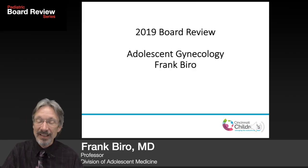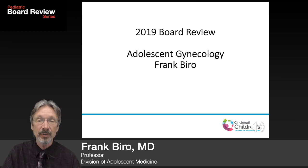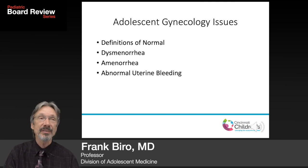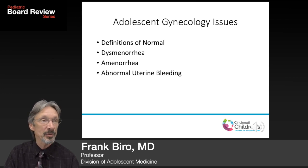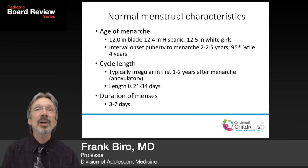Good day. We're going to continue with our discussion on adolescent medicine, doing pediatric and adolescent gynecology. We'll talk about some definitions of normal, and then we'll go into three specific diagnoses: dysmenorrhea, amenorrhea, and abnormal uterine bleeding, which used to be called dysfunctional uterine bleeding.